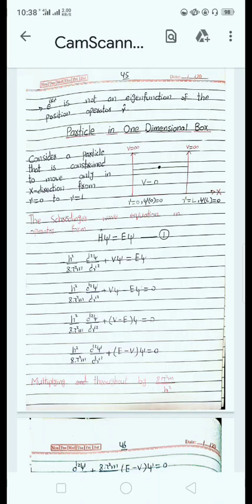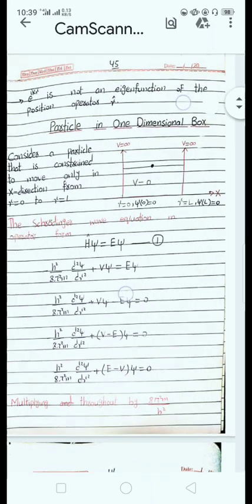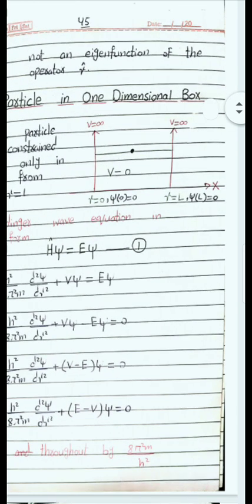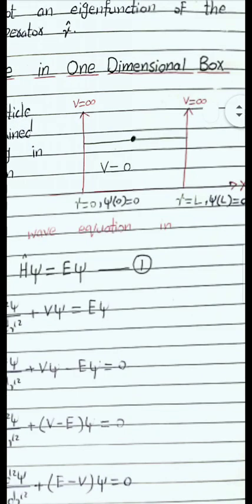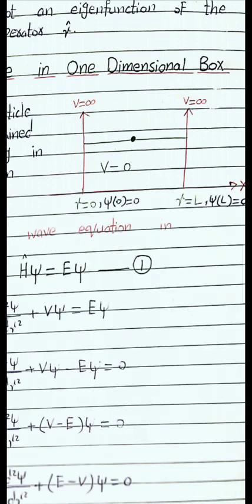Assalamu alaikum students. Today we will discuss the particle in a one-dimensional box. This is our infinite potential box. The infinite potential well is a potential well where we apply infinite potential on the walls. On the walls, potential is infinite (V = ∞), and inside the potential well, V = 0.